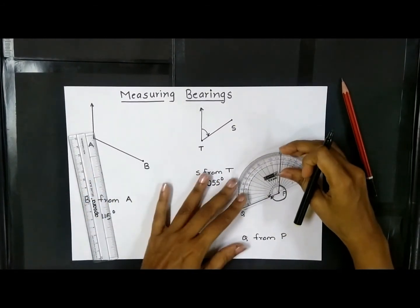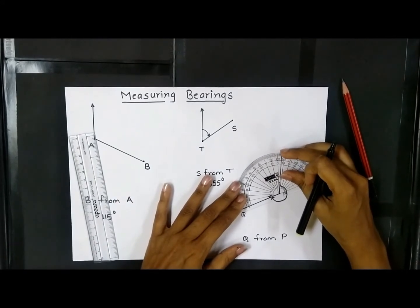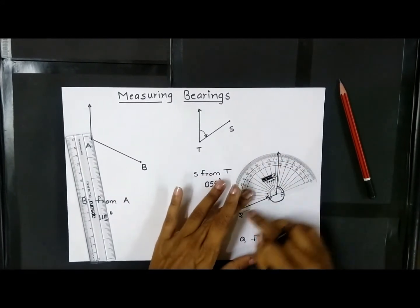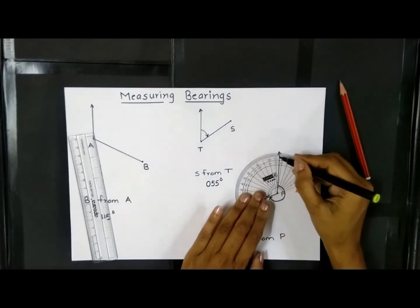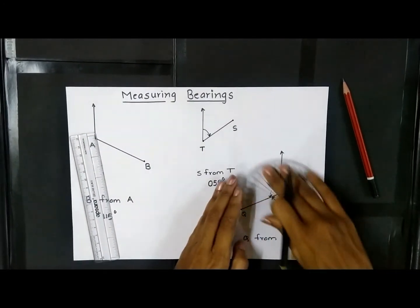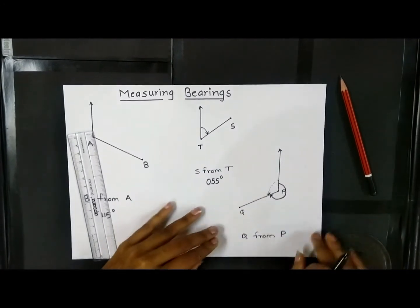By keeping my protractor in alignment with QP, this angle is 115 degrees.